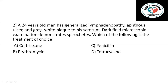Question two: a 24-year-old man has generalized lymphadenopathy and an ulcer with a gray-white plaque on his scrotum. Dark field microscopy examination demonstrates spirochetes. Which of the following is the treatment of choice? A: ceftriaxone, B: erythromycin, C: penicillin, D: tetracycline. Please pause the video and answer the question. In this young patient with a skin lesion and the laboratory finding of spirochetes, what is your diagnosis?